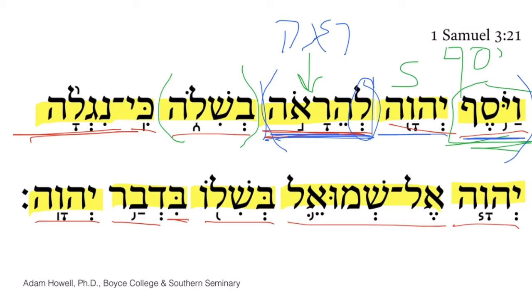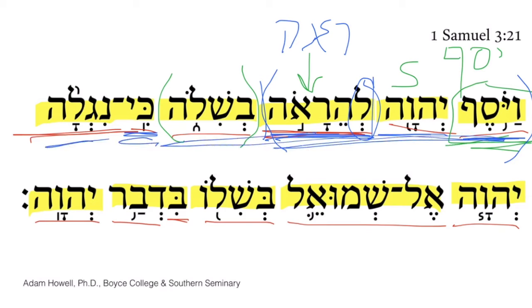The next clause begins with key and introduces a ground clause as a restatement: 'The Lord appeared again at Shiloh, for He revealed Himself at Shiloh.' It seems redundant, but again, this is good Hebrew.